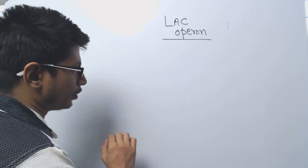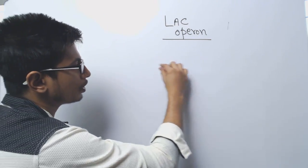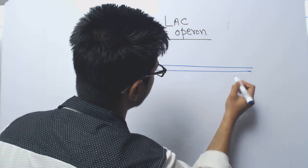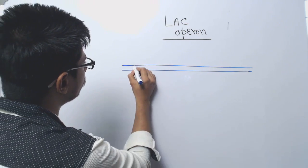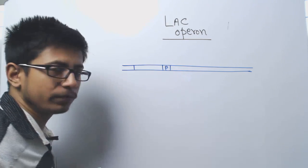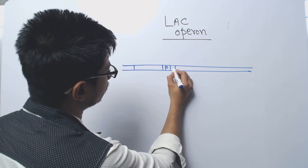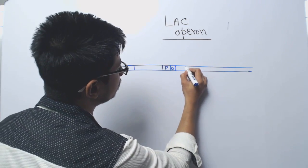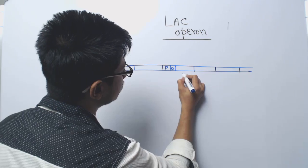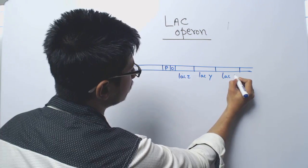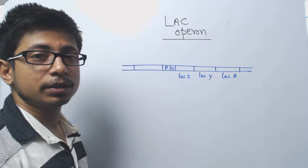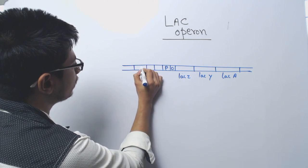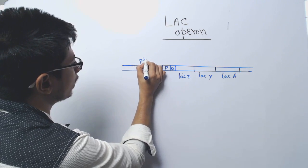In the case of the lac operon, we will also have an operon construction. Let me draw the construction. We have a promoter region — P for promoter — and we have a region called the operator. In the downstream of this promoter-operator region, there are three structural elements: lac Z, lac Y, and lac A. On the upstream element of the promoter, there is lac I and the promoter for lac I.